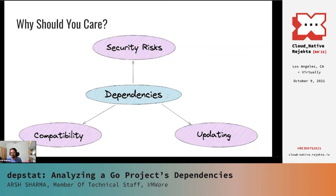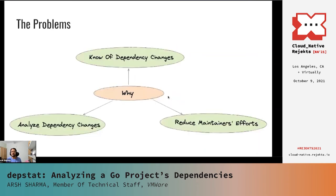It was to solve these very problems in the upstream Kubernetes project that we created Depstat. Before we see what Depstat does, let me go over what we wanted out of this tool. We knew that we needed something to analyze dependencies, but what should this thing do? The biggest problem we wanted to solve was that with the Kubernetes repository receiving so many pull requests, it was getting tough to notice which of these were changing dependencies. Not only that, but more importantly, how were these PRs changing the dependencies? What was the impact of these changes? We also wanted there to be a way using which PR authors can themselves see the impact of dependency changes they are making without them having to rely on one of the maintainers.